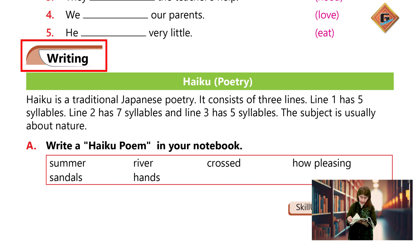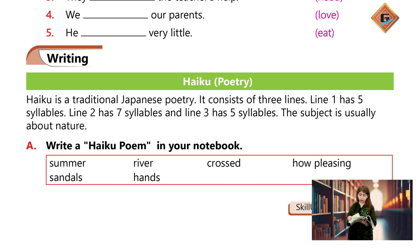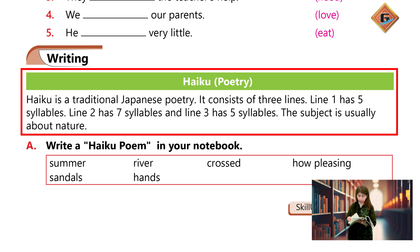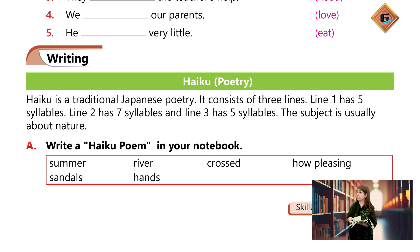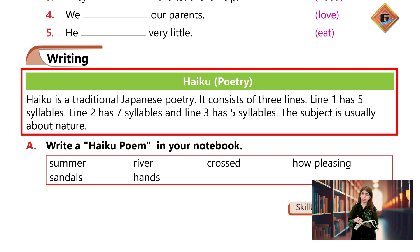Ab hum writing mein chalte hain. Writing mein yahan par humein kaha gaya hai ki ek haiku poem humne apni notebook mein likhnee hai. Haiku poem basically ek traditional Japanese poetry ki form hai. Is Japanese poetry mein basically poem ke andar sirf teen lines hoti hain.